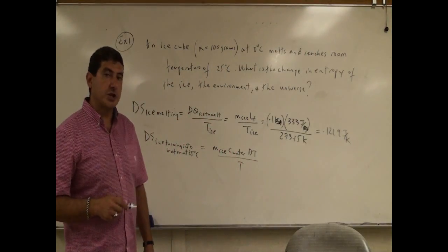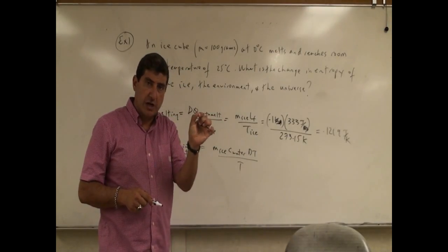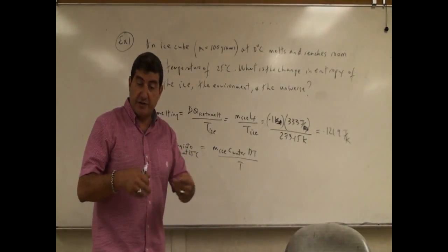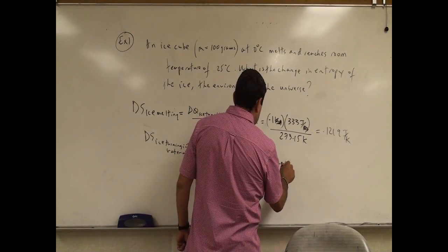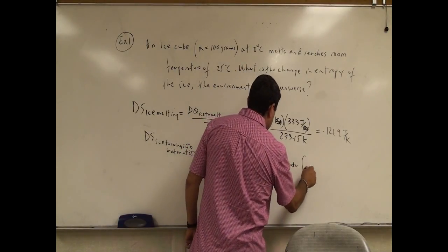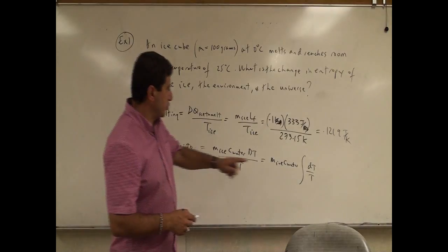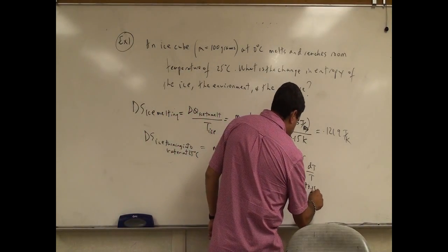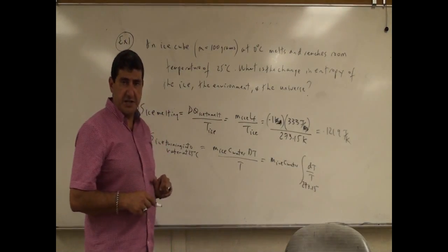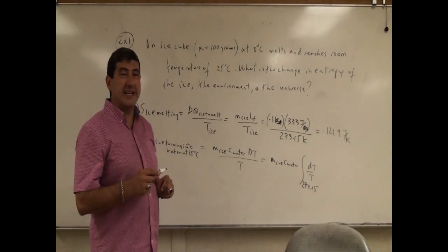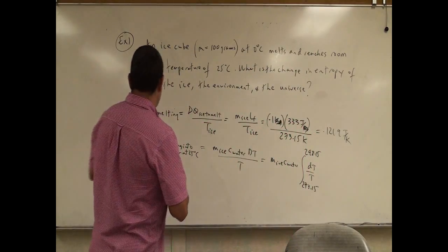This becomes an integral, because the incremental change in temperature divided by temperature — the temperature of the water is increasing. So you have to integrate: M_ice times specific heat of water, times ln(dT/T), from 273.15 Kelvin all the way to the final temperature, which is 25 Celsius converted to Kelvin: 298.15 Kelvin.